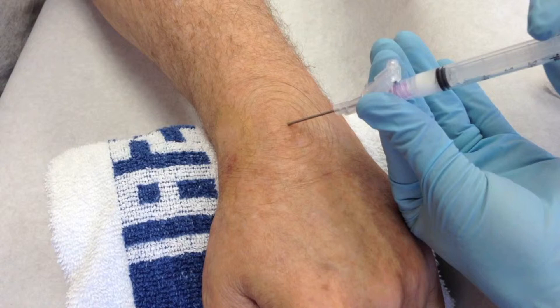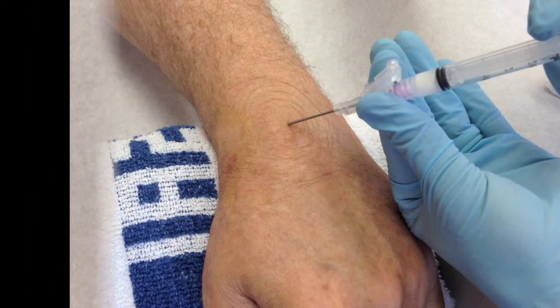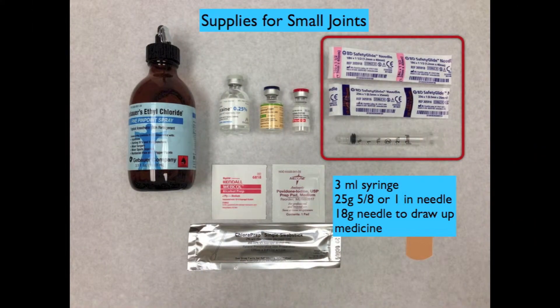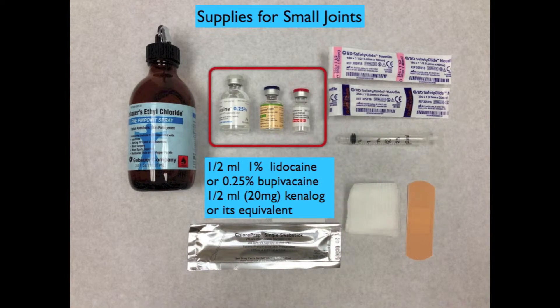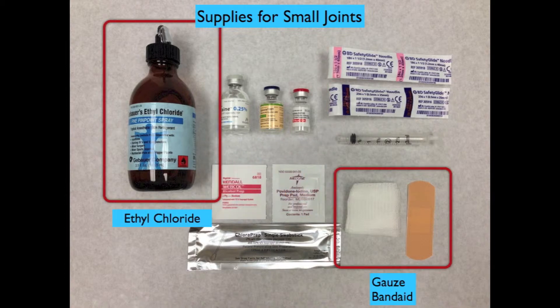Early studies of injecting steroid after aspiration showed good success, but these have not been reproducible. Currently, since ganglion cysts are not inflammatory in origin, steroid injection may be no better than aspiration alone. If you plan on injecting steroid, draw up one half milliliter of 40 milligrams per milliliter Kenalog or equivalent with one half milliliter of one percent lidocaine. Other supplies include ethyl chloride to anesthetize the skin, plus gauze and a band-aid to stop bleeding after removing the needle.